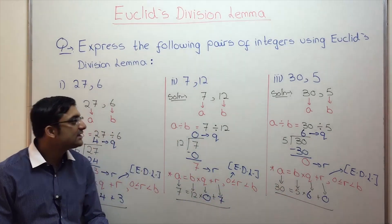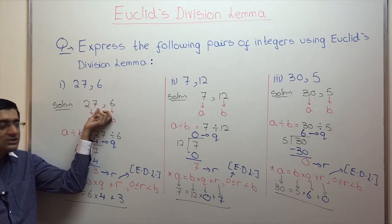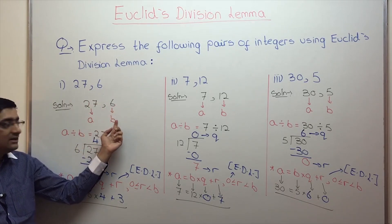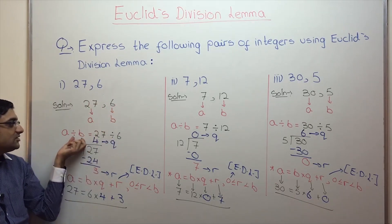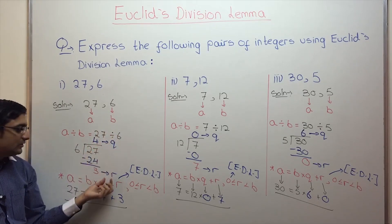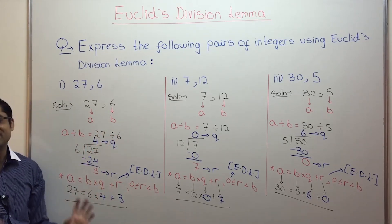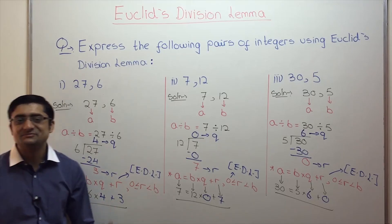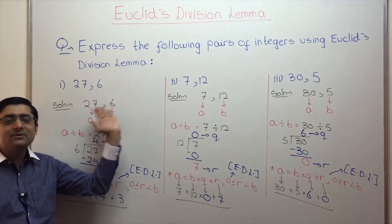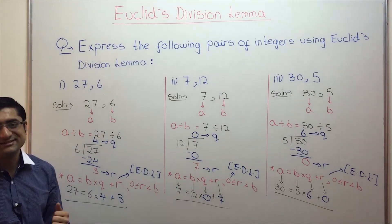To summarize: for any pair of integers, first step — copy integers and label the first as A, second as B. Then divide A by B, label the quotient as Q and remainder as R. State Euclid's division lemma and plug in the values. This is how you can express any pair of positive integers using Euclid's division lemma.